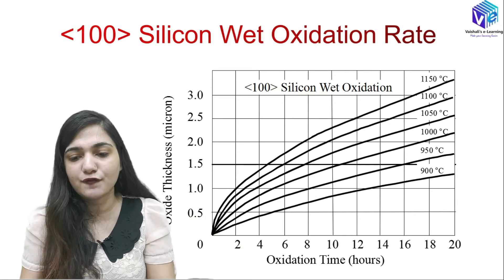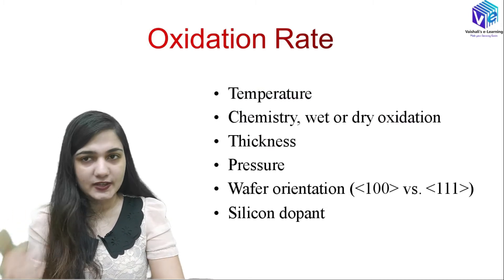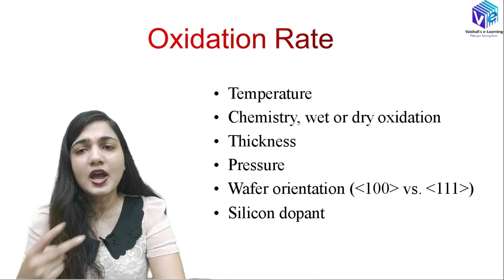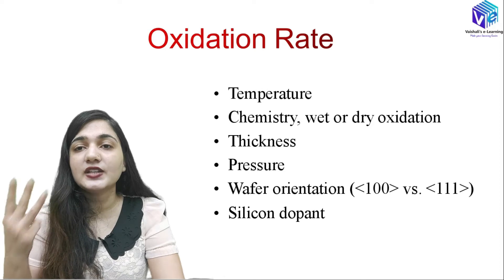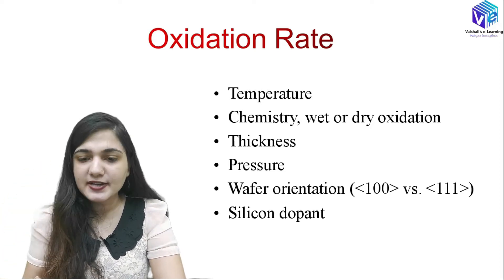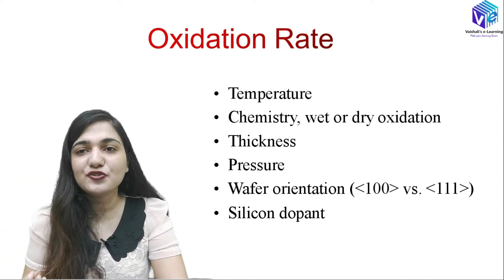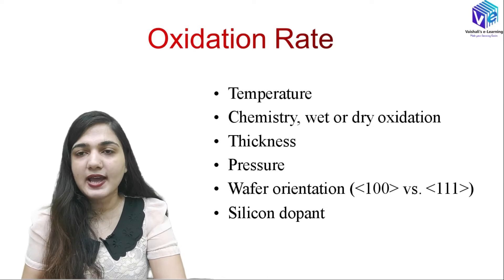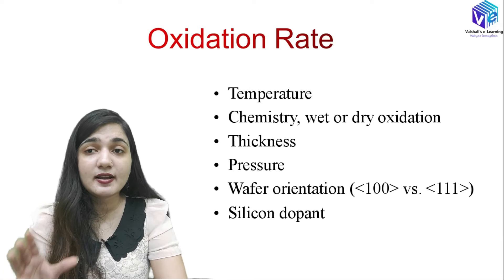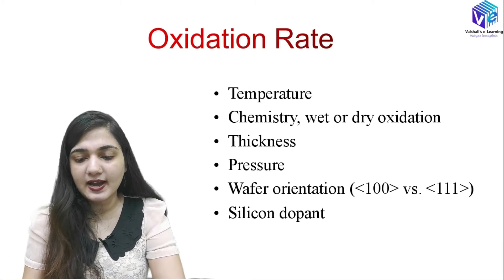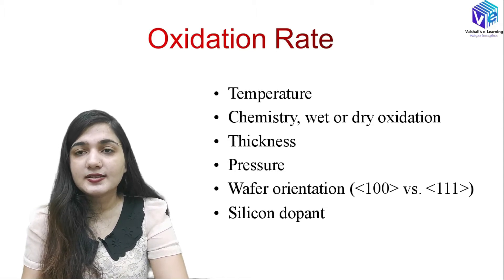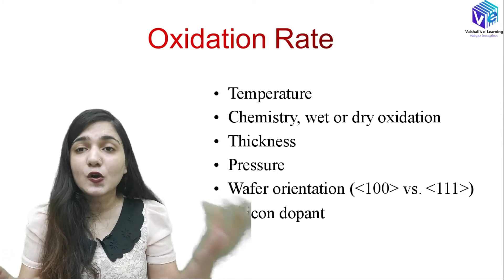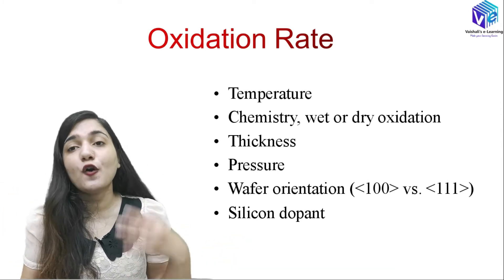The oxidation rate depends on several factors: temperature, the type of oxidation process (dry or wet), the existing oxide thickness, pressure (higher pressure causes faster oxygen diffusion and faster SiO2 production), wafer orientation (100 vs. 111), and dopant distribution. Whether silicon has n-type or p-type dopants affects the oxidation rate, and we will compare these parameters in detail.